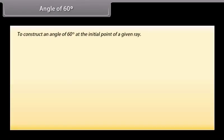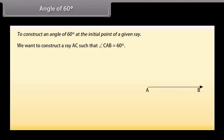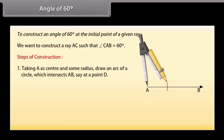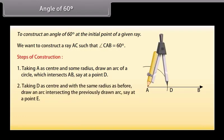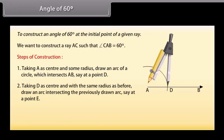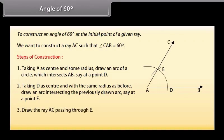Angle of 60 degrees. We know how to construct 30 degree and 45 degree angles. Now, we will learn to construct an angle of 60 degrees at the initial point of a given ray. Let us take a ray AB with initial point A. We want to construct a ray AC such that angle CAB equals 60 degrees. Steps of construction: Taking A as center and some radius, draw an arc of a circle which intersects AB, say at point D. Now, taking D as center and with the same radius as before, draw an arc intersecting the previously drawn arc, say at point E. Draw the ray AC passing through E. Then, angle CAB is the required angle of 60 degrees.